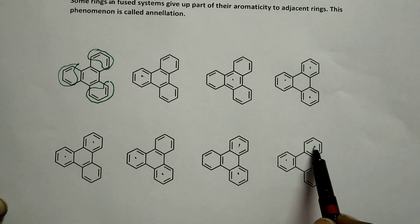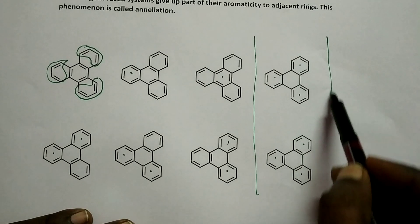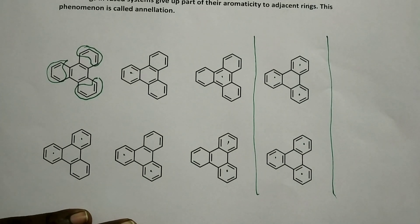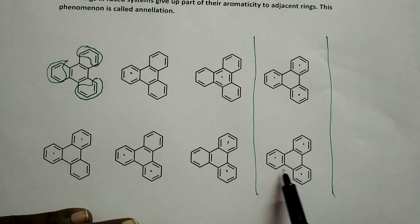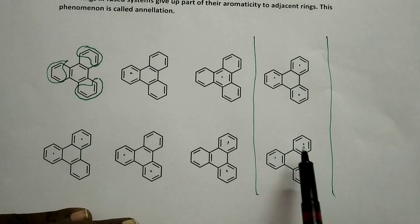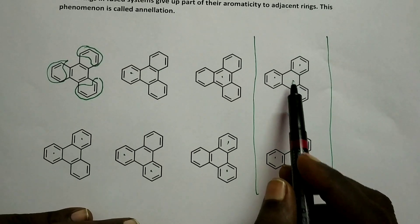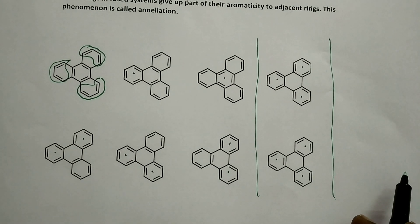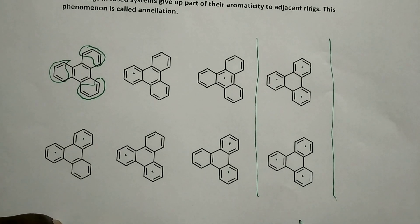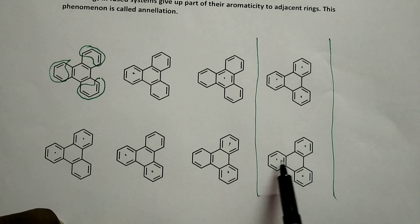These two canonical forms are very special because three out of four rings are benzene rings. But look at the middle ring — the center one. How many pi electrons? Nothing. It is empty. The middle ring is empty here and here also. What happened? The middle ring has donated, has sacrificed its pi electrons to the adjacent rings.